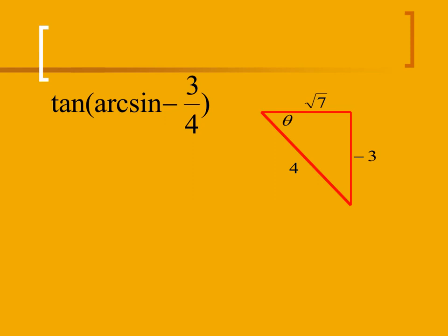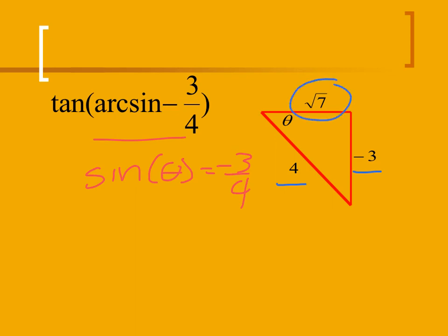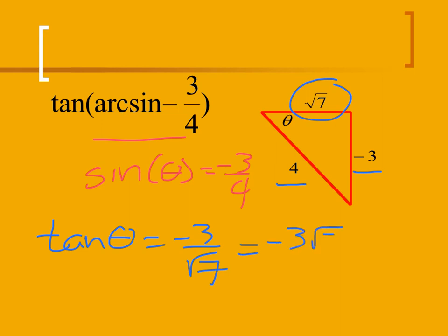Here's another example. We start by rewriting the arc sine of negative 3 over 4, giving us the sine of theta equals negative 3 over 4. The hypotenuse must be positive since it represents a distance, so the hypotenuse is 4 and the opposite side is negative 3. Using the Pythagorean identity, the adjacent side is the square root of 7. Now, the tangent of theta is opposite over adjacent, giving us negative 3 over the square root of 7. Rationalizing, we get negative 3 radical 7 over 7.